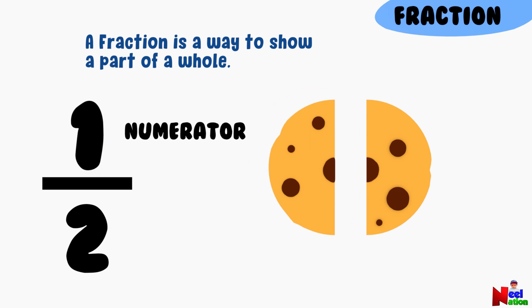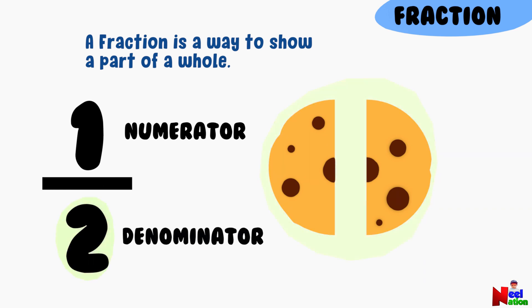In this case, the numerator is 1, which tells you that each friend receives one part. The bottom number is called denominator. It shows how many parts make up the whole thing. In this case, the cookie has two parts in total.